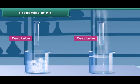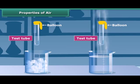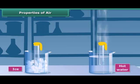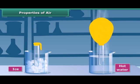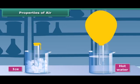Now take two empty test tubes and place a balloon over the mouth of each bottle. Put one test tube in a pan of hot water and the other one in a pan with ice. Observe carefully. The balloon on the test tube in hot water begins to inflate. This is because the hot water heats the air inside the test tube. When air gets warm, it expands and rises, which inflates the balloon.